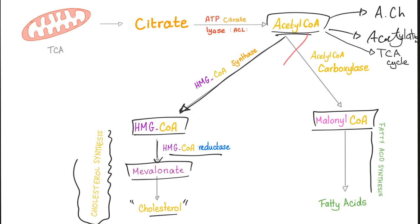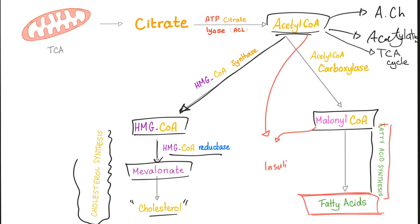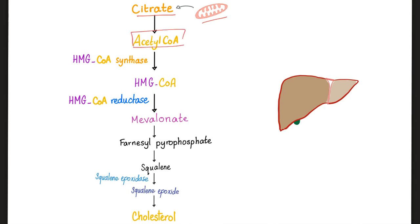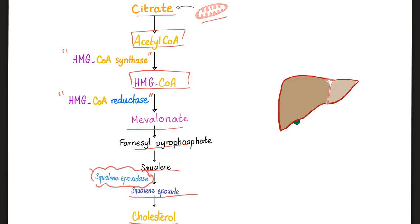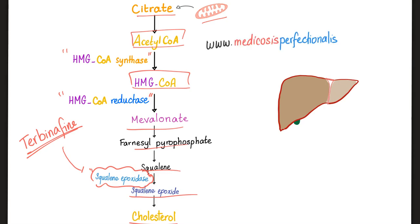Acetyl-CoA combines with malonyl-CoA to elongate fatty acid chains in the fatty acid synthesis pathway. In the cholesterol pathway, mevalonate proceeds through squalene, then squalene epoxidase gives squalene epoxide, and then cholesterol. Squalene epoxidase is inhibited by terbinafine, which is an antifungal drug.